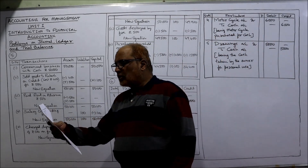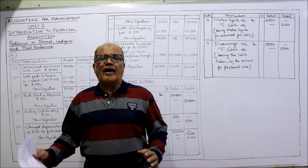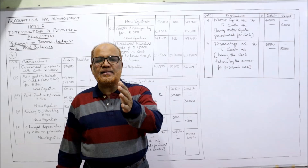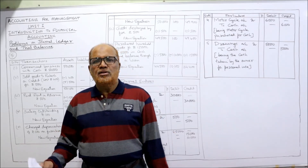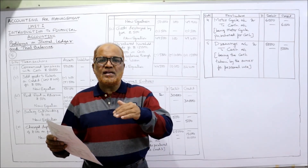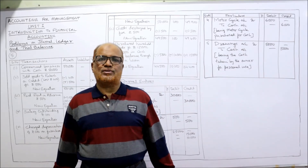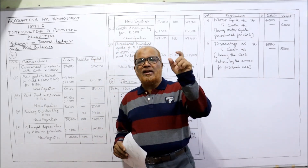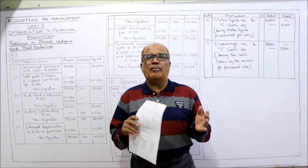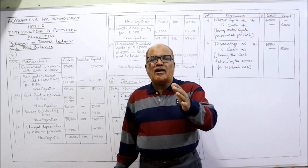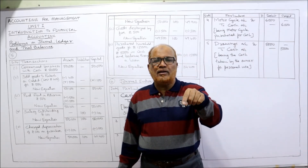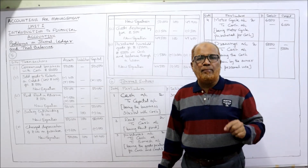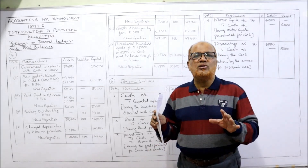The fifth problem is: show the accounting equation from the following transactions. The accounting equation is: Assets = Capital + Liabilities, or Capital = Assets − Liabilities. Transactions are given and we have to show the effect on the accounting equation. The traditional method records transactions by debiting one account and crediting another. The modern method identifies for every transaction whether it affects asset, liability, or capital.